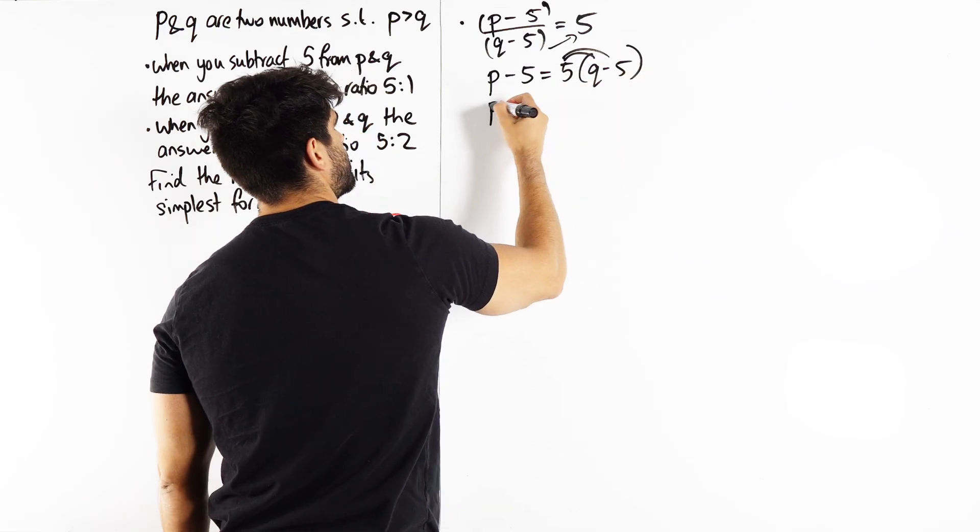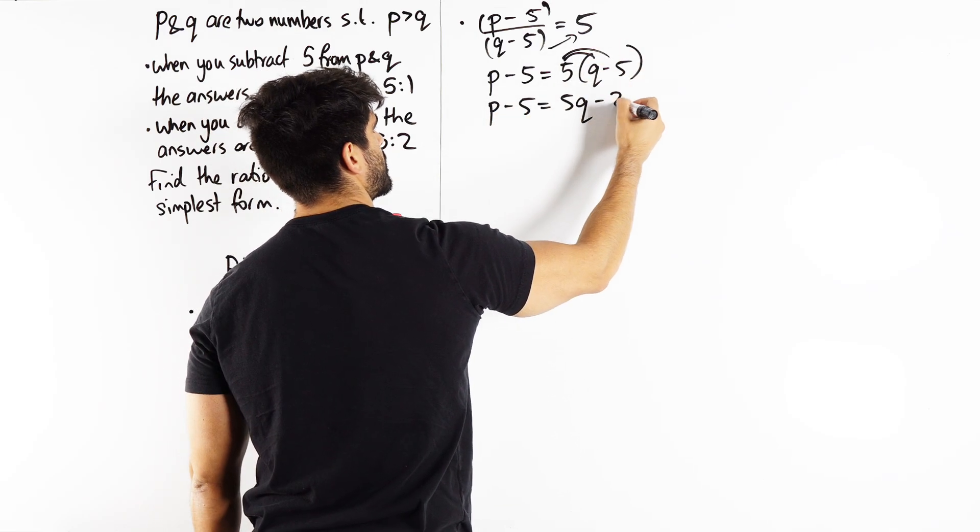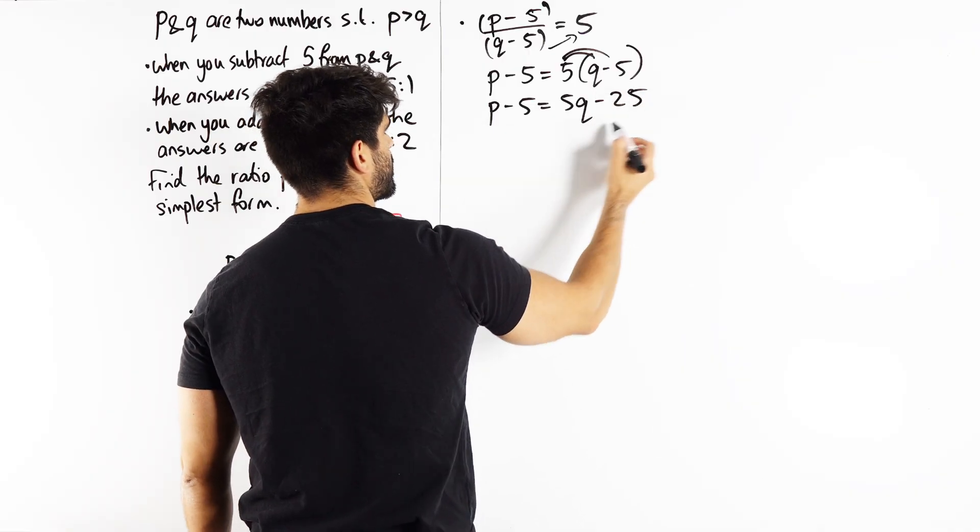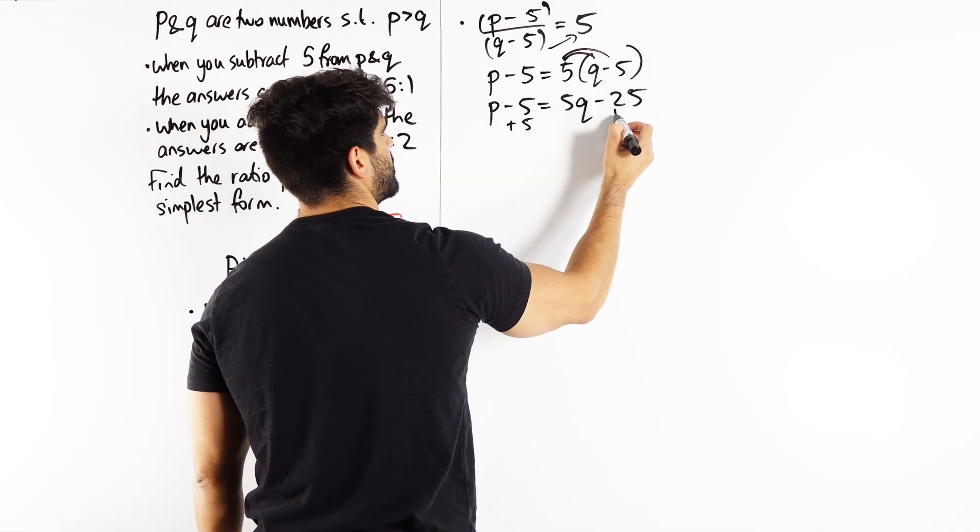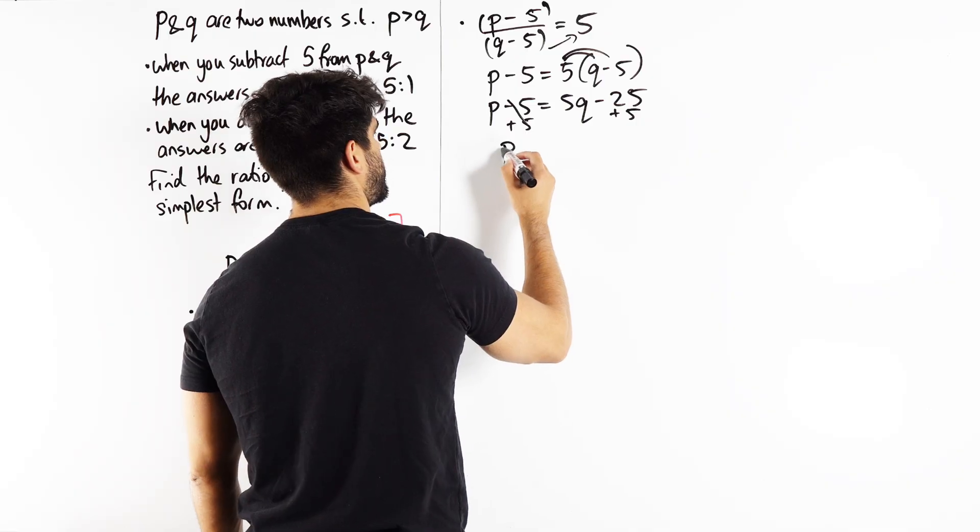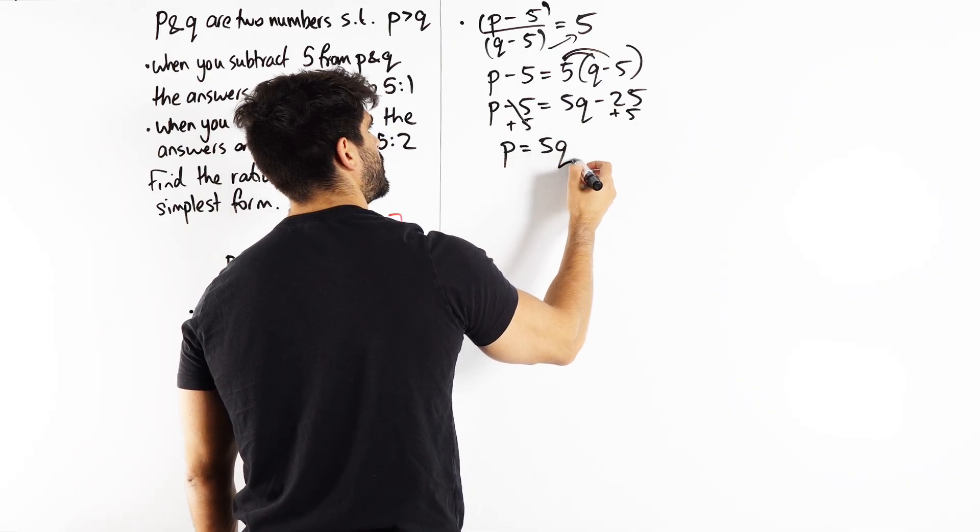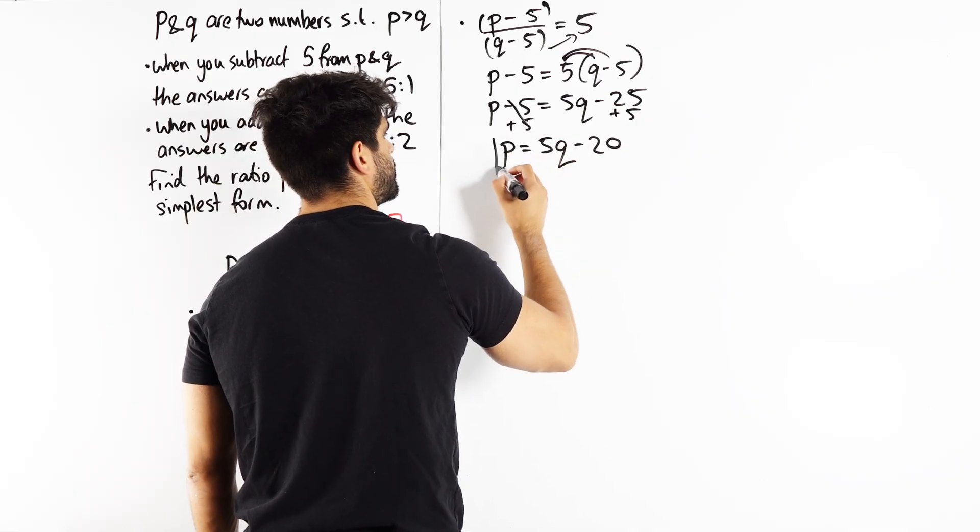We get P minus 5 is 5 lots of Q minus 5. Expand. P minus 5 is 5Q minus 25. And then we're going to add that 25, add that 5 to both sides. So we get P is 5Q minus 20. Nice.